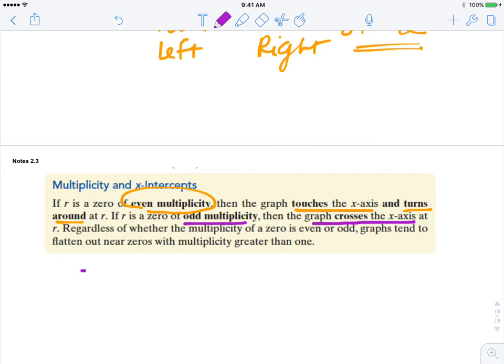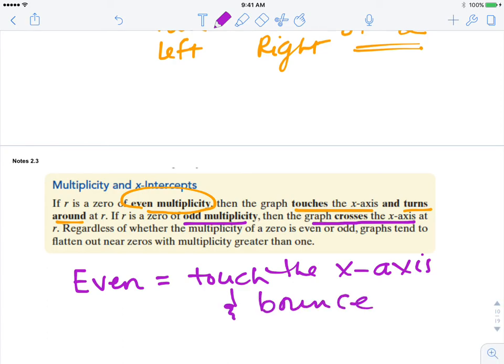So when it's even, it's going to touch the x-axis and bounce off or turn around. If it's an odd multiplicity, it's going to cross through.